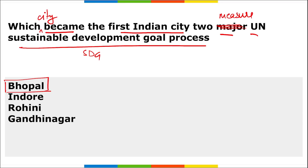It is Bhopal — the capital of Madhya Pradesh — that became the first Indian city to join the growing global movement on localization of Sustainable Development Goals mandated by the UN. Bhopal will now have voluntary local reviews to demonstrate the local government's capacity and commitment towards achieving the 2030 agenda for sustainable development.